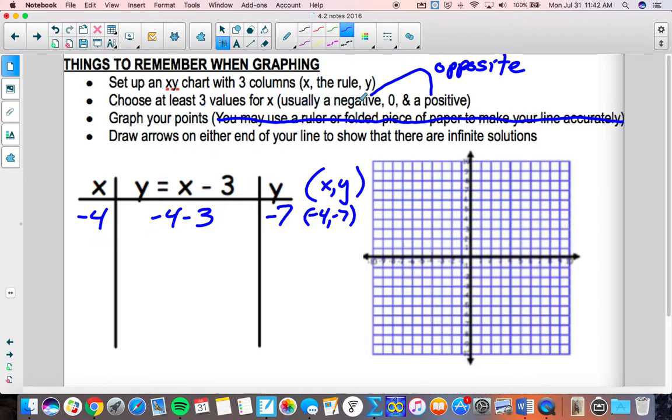So let's see here. Choose at least three values. A negative, a zero. So now I'm going to try zero. I'm going to plug zero in for x. Zero is awesome to work with. Zero minus three is negative three. When x is zero, y is negative three. That's another coordinate pair or another solution to this equation. It'll be a point on my line.